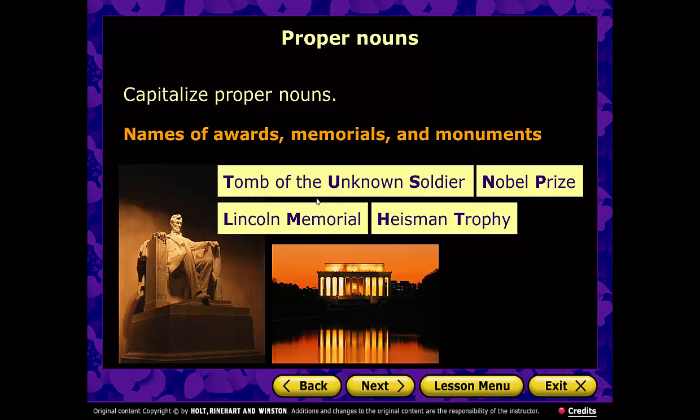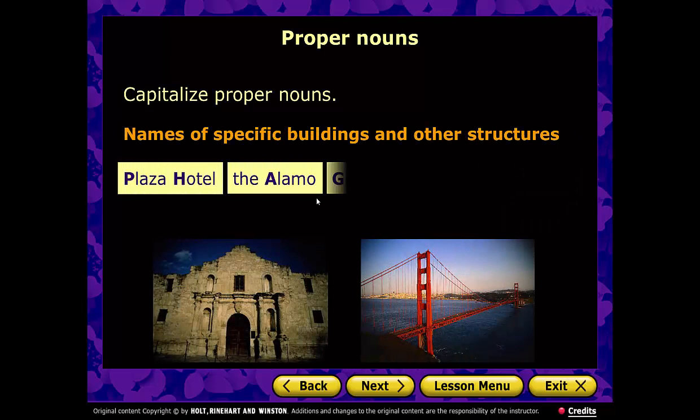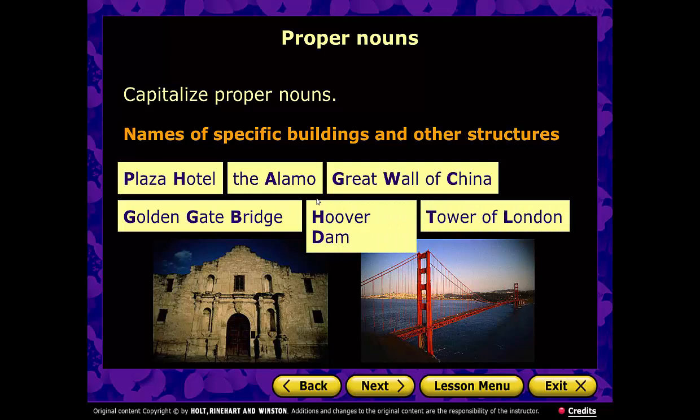Specific buildings and other structures are capitalized: Plaza Hotel, the Alamo in Texas, the Great Wall of China, the Golden Gate Bridge — I went there this summer and sailed underneath it in a catamaran — Hoover Dam out west, and the Tower of London.